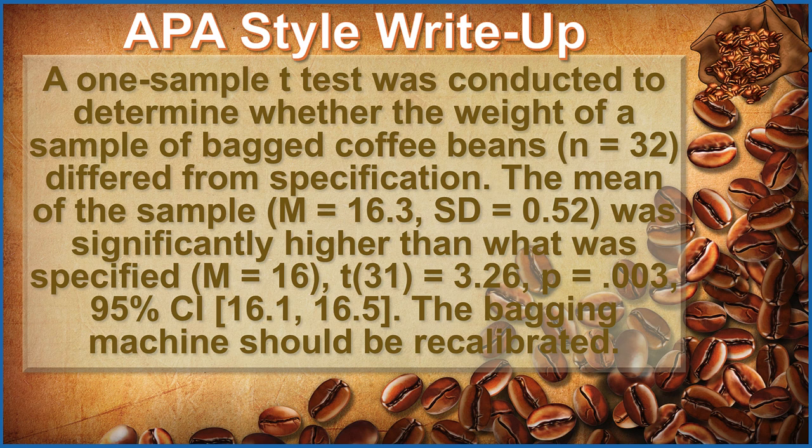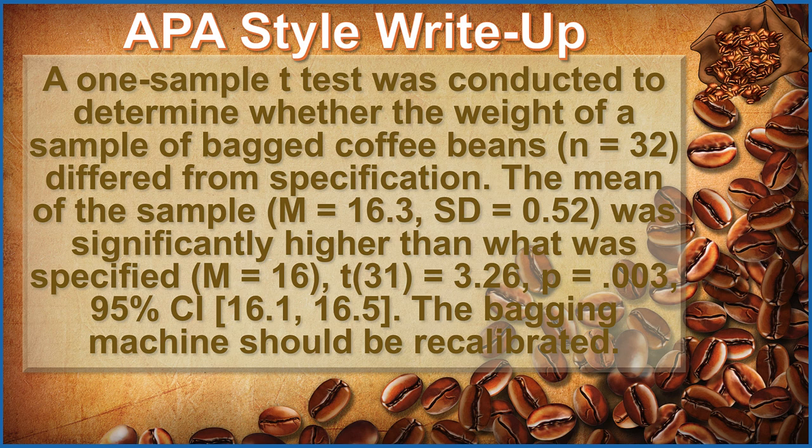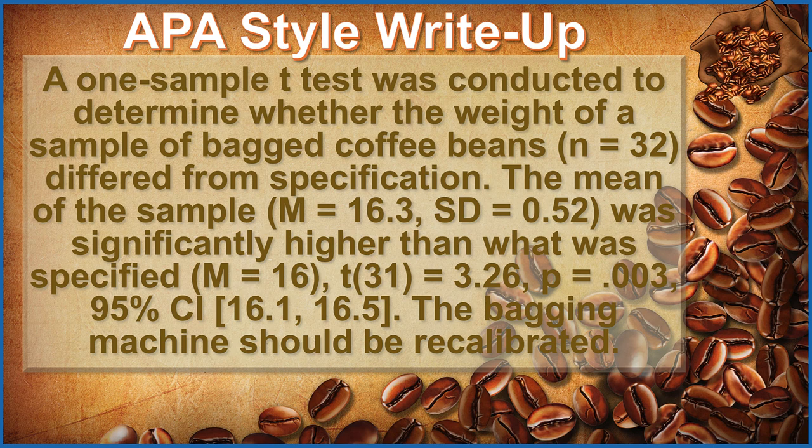Having interpreted these findings, we can now write up our results in APA style. A one-sample t-test was conducted to determine whether the weight of a sample of bagged coffee beans with an n of 32 differed from specification. The mean of the sample, a mean of 16.3 and standard deviation of 0.52, was significantly higher than what was specified, a mean of 16. t with 31 degrees of freedom equals 3.26, p of 0.003, 95% confidence interval of 16.1 to 16.5. The bagging machine should be recalibrated.